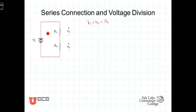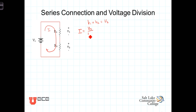To derive our relationships here, let's note that we have this current flowing through both of those resistors because they're in series, and that I is equal to Vs divided by the sum of the two resistances.